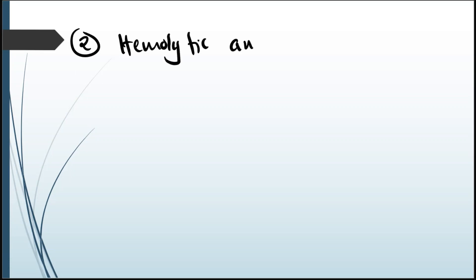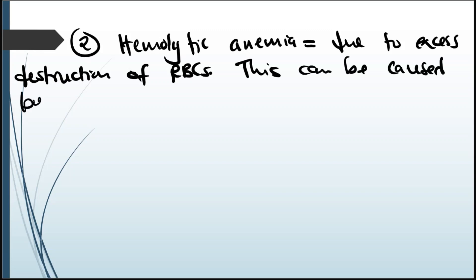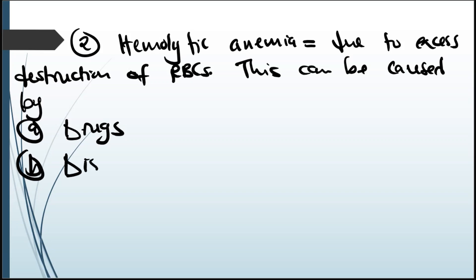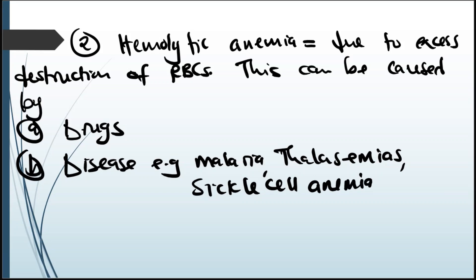The second type of anemia is hemolytic anemia. Hemolytic anemias are due to excess destruction of red blood cells. This can be caused by number one: drugs. Number two: diseases like malaria, thalassemias — where you have abnormal hemoglobin — and sickle cell anemia, where you have a sickle-shaped, rigid red blood cell that cannot pass through the reticuloendothelial system, causing a lot of destruction.